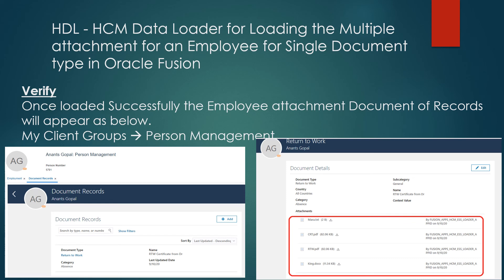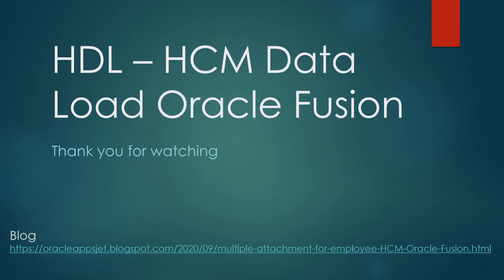Once it has successfully loaded, you need to verify the data. You can see the attachments have been successfully loaded. We loaded an attachment for employee 5791, who has the document type as Right to Work, and is now having multiple attachments as you can see on the screen — a text file, a PDF file, and a document file. So we have attached multiple attachments for a single document of record type. Thank you for watching, see you in the next video.